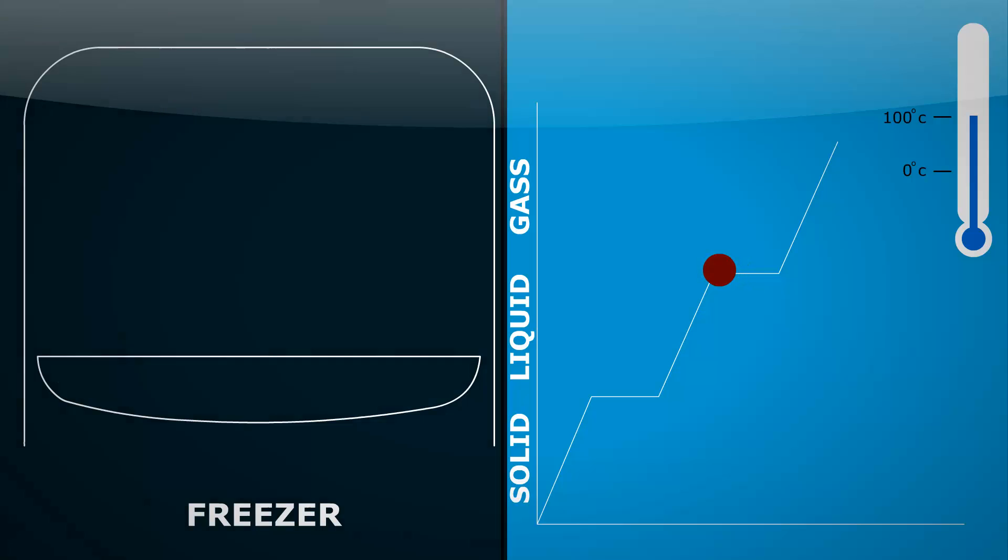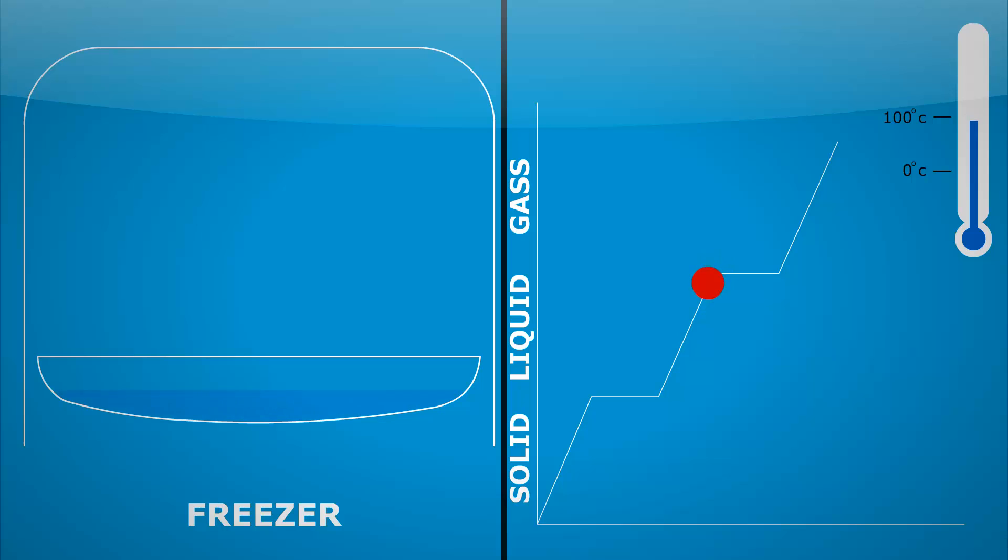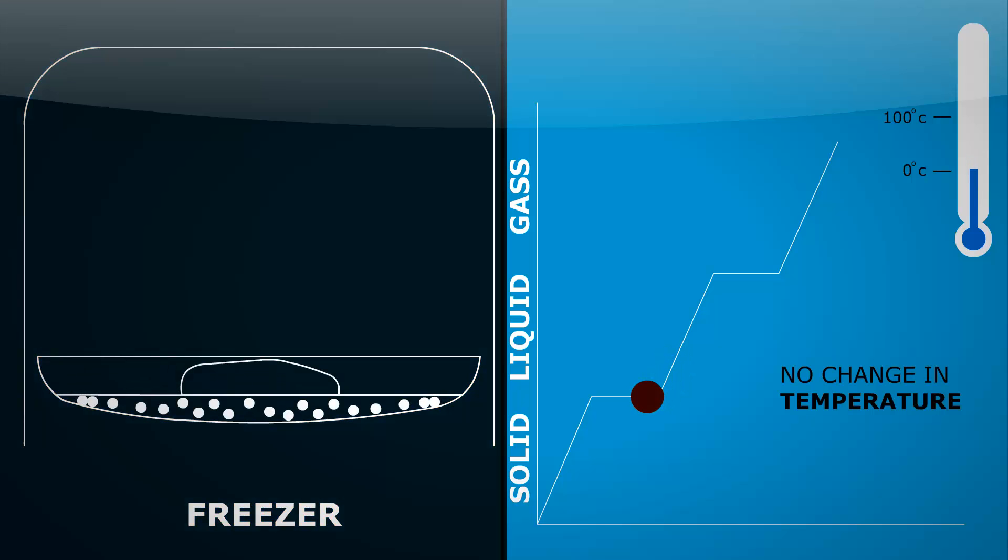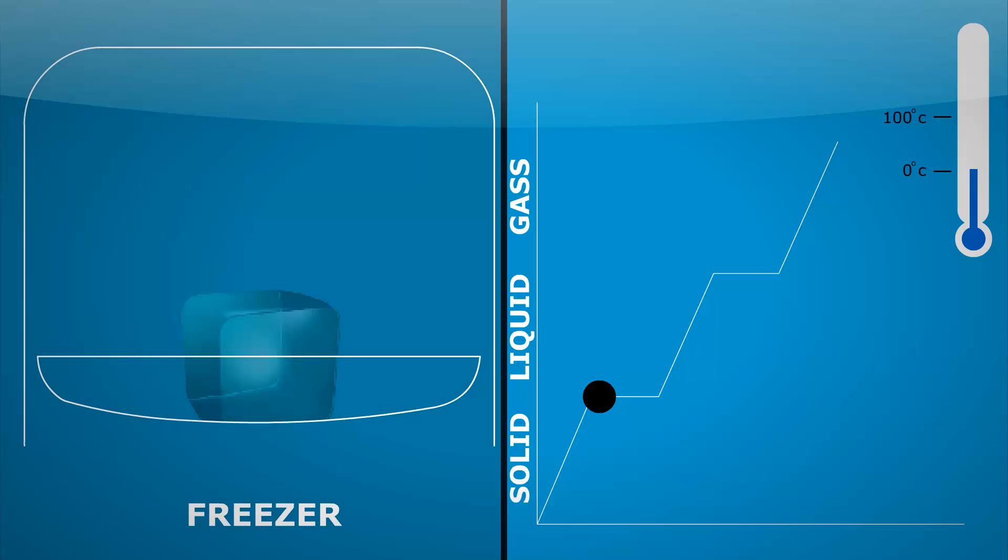Once all of the steam is condensed to liquid, the temperature can start to fall again until we get down to zero degrees C. This is where it starts to turn to ice. And again, there's no change in temperature as the forming of bonds is releasing energy. Once all of the water is turned to ice, then the temperature of the ice can again start to decrease.